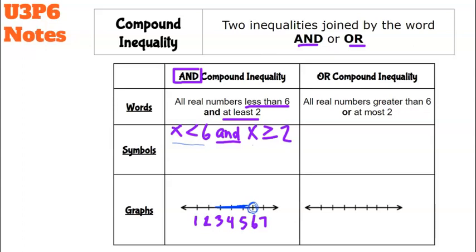For x ≥ 2, I close the circle at 2 and shade to the right — 3, 4, 5 are all greater than 2. An AND compound inequality has two circles on the ends, and the shading happens in the middle, indicating a number fits both conditions: greater than or equal to 2 and less than 6.